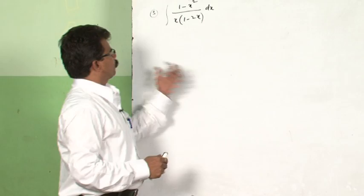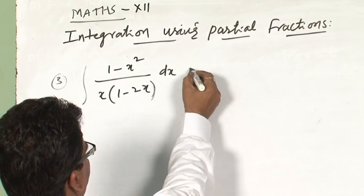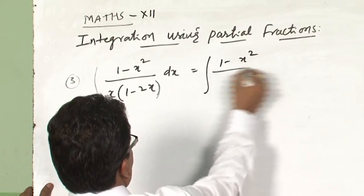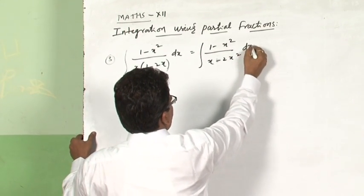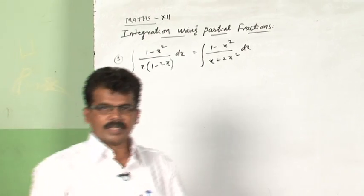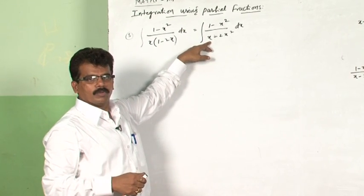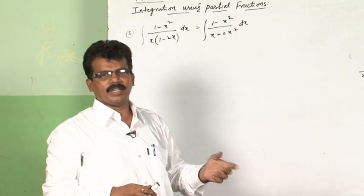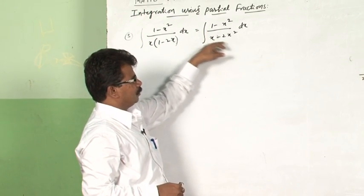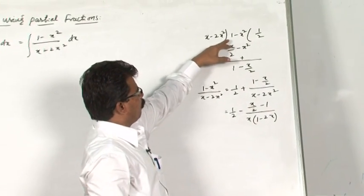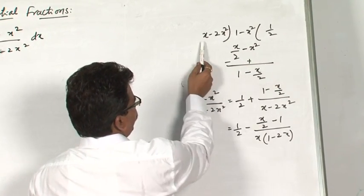Let us see one more question: integral of (1 − x²) divided by x(1 − 2x). Simplifying the denominator gives x − 2x². Observe the integrand — the degree of the numerator is 2 and the degree of the denominator is also 2. Since this is not a proper rational function, we must first convert it by dividing numerator by denominator.